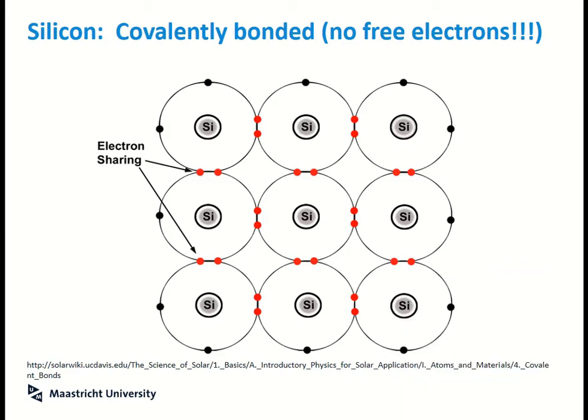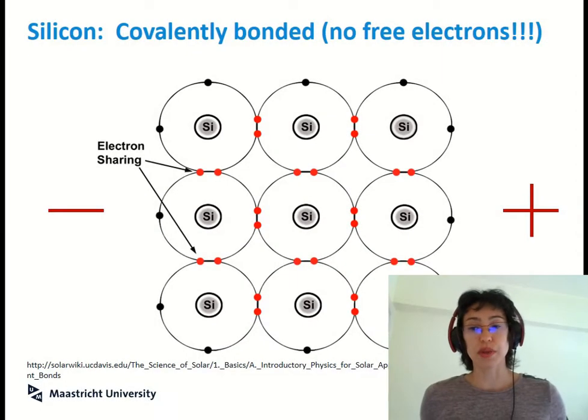So these are the outer electrons drawn in there. You can see that they are all involved in covalent bonding. This means that unlike a metallic conductor that you just saw, in this case there are no free delocalized electrons to conduct current across the crystal.